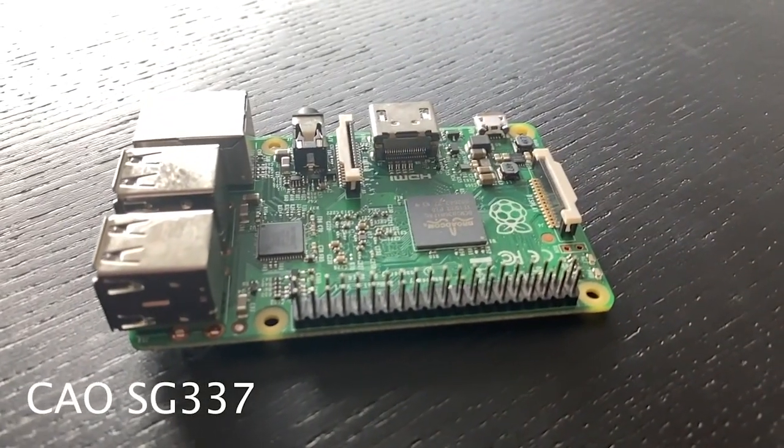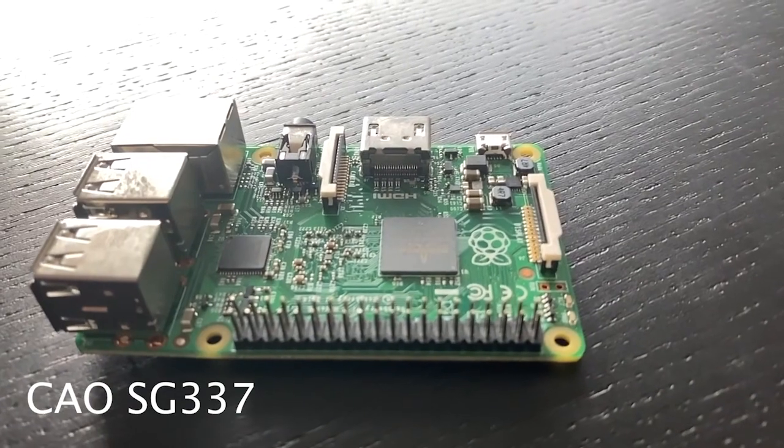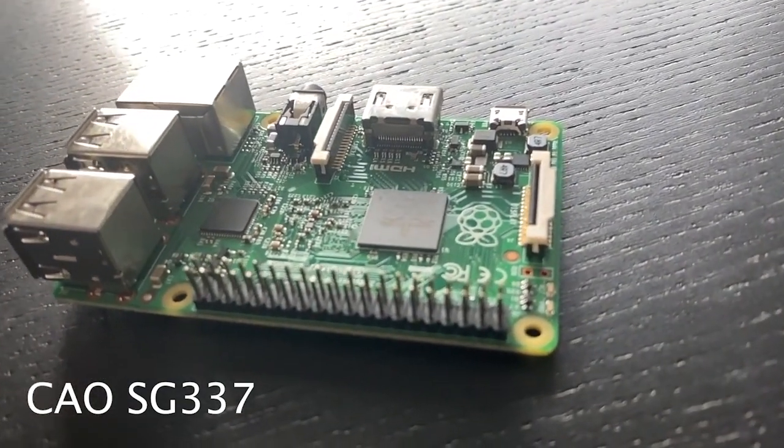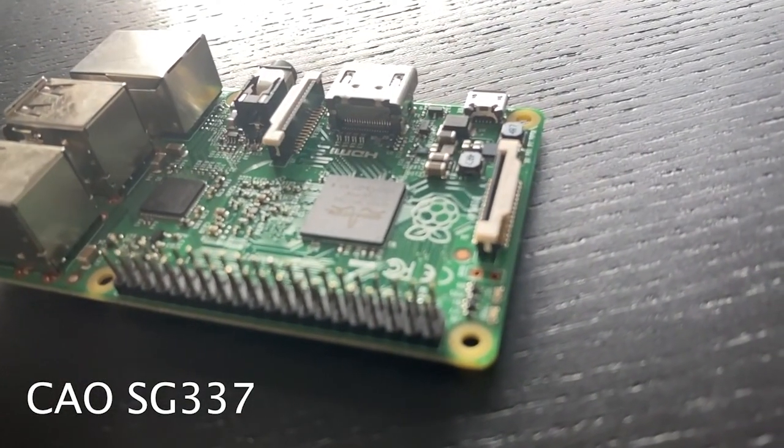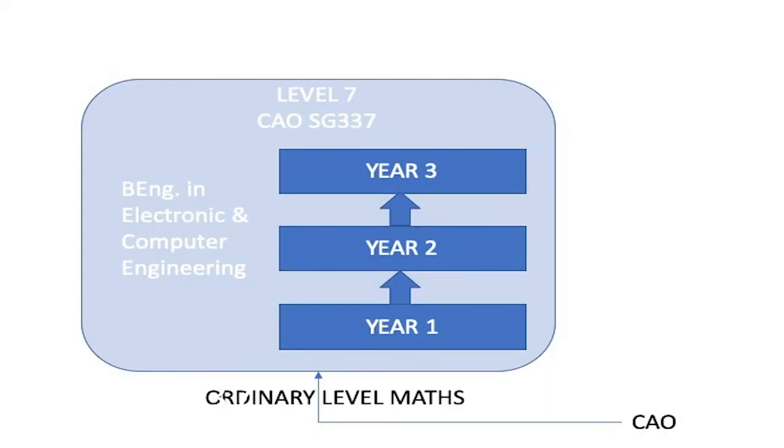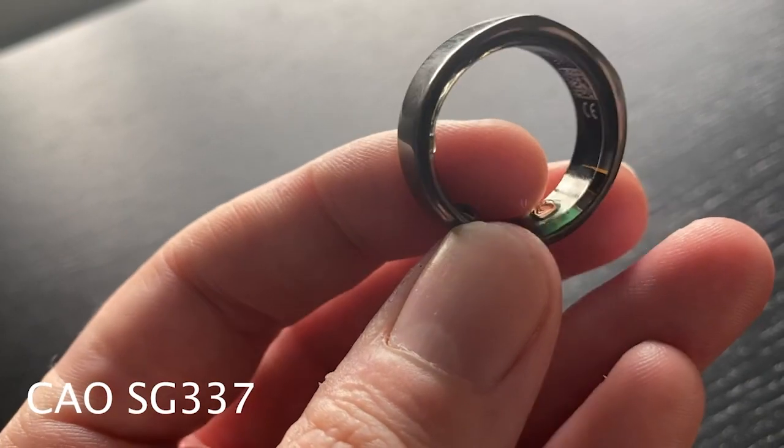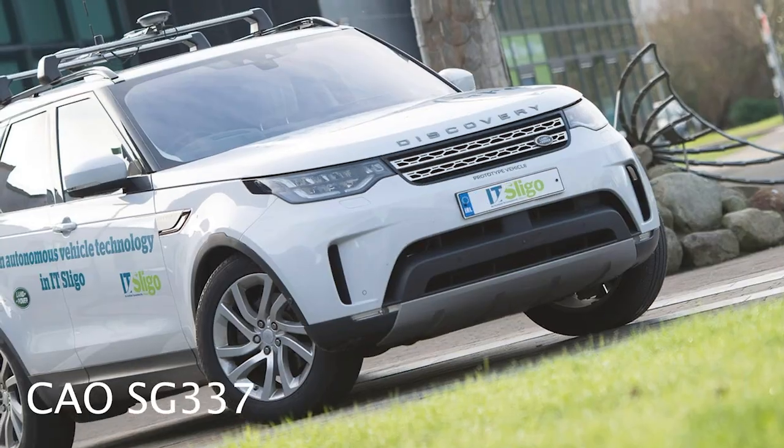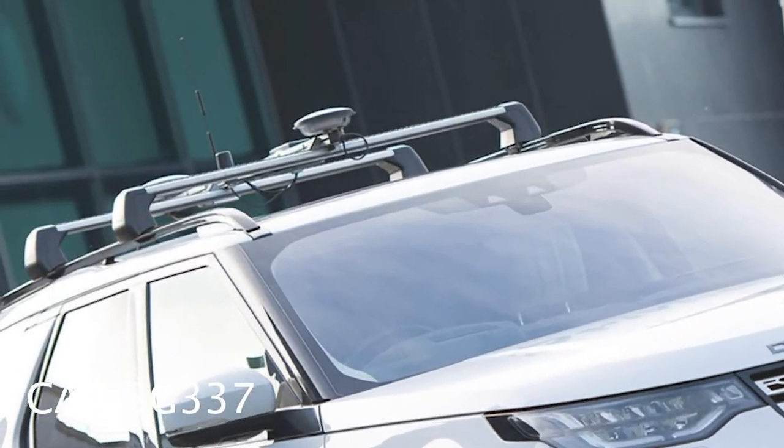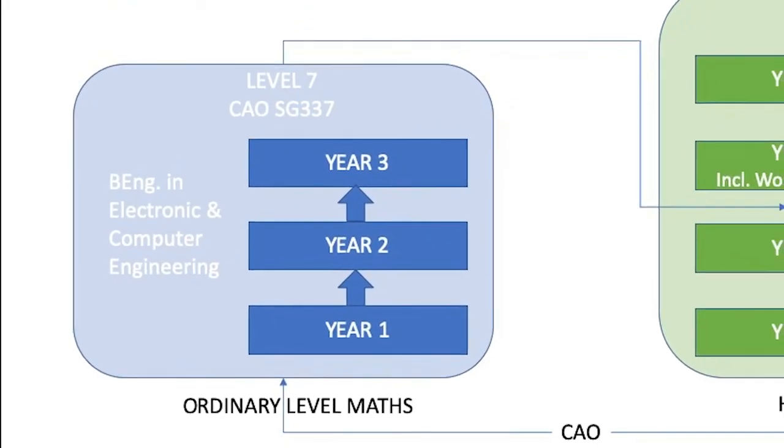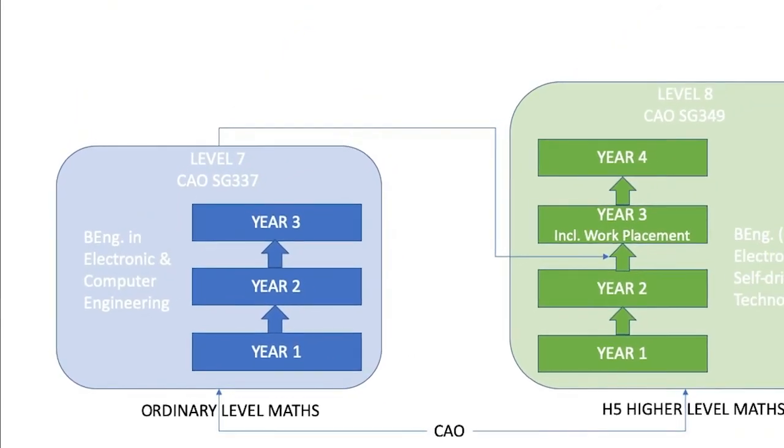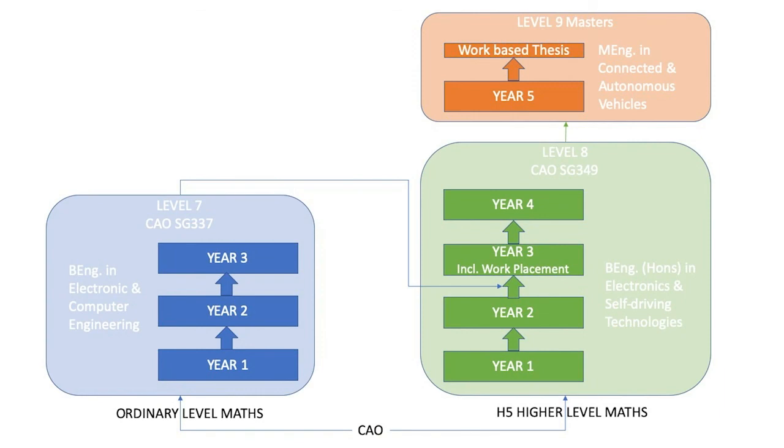If you are interested in technology or engineering but are not doing higher level maths, why not consider our level 7 in Electronic and Computer Engineering? This is a three-year program that looks at the design and development of embedded electronic systems—these are the medical devices that keep us healthy, the consumer devices that keep us entertained, or the control systems that keep us safe on the road. You can then progress onto the level 8 in Electronics and Self-Driving Technologies and from there to the Masters. Check out the link below for more information.